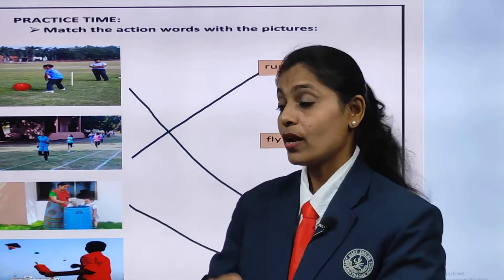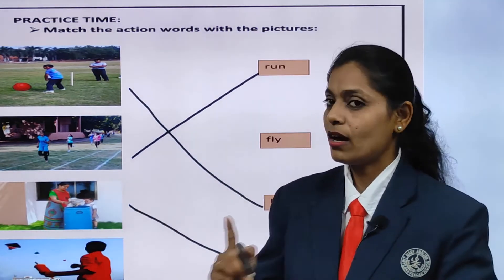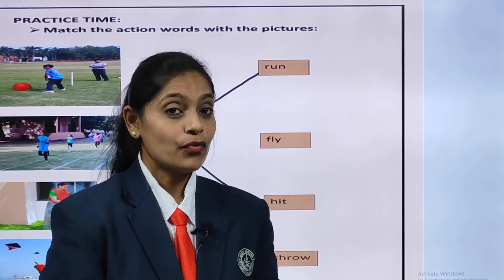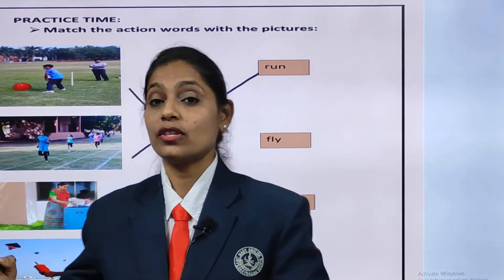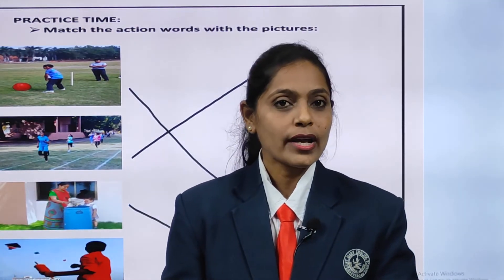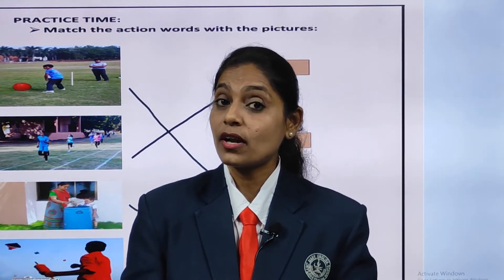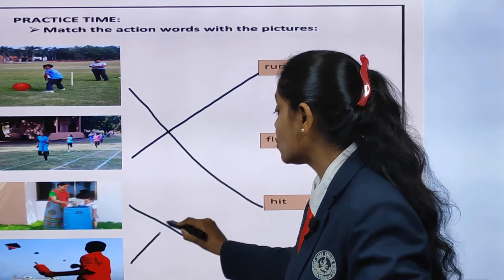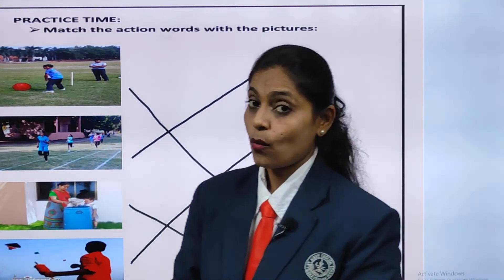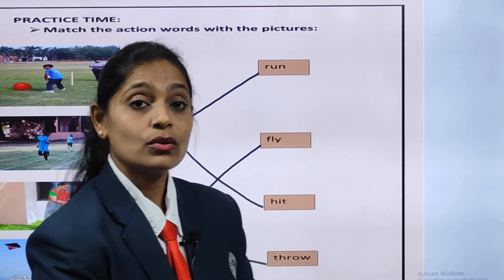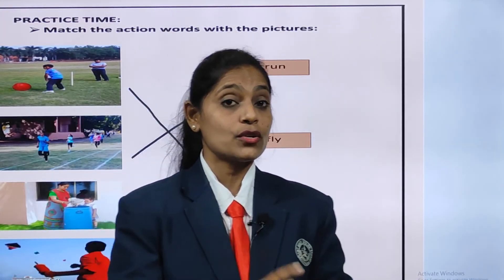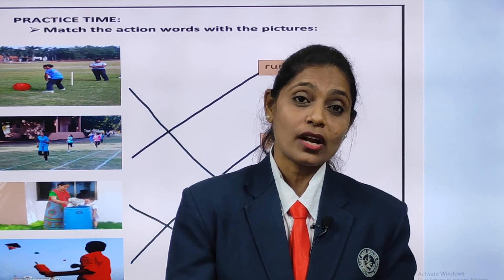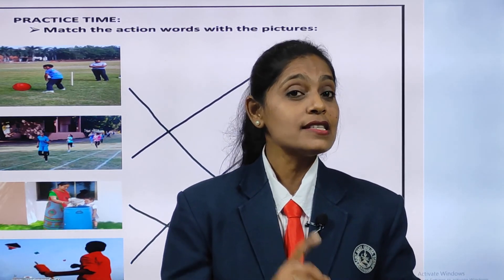Now the last one — what is the boy doing? He is flying a kite. All of you like to fly kites! So this boy is also flying the kite. What action is he doing? Fly! Even birds fly. So what are we going to do? We are going to join here. Now you are going to practice all these action words at home by doing the actions. Be good children, always obey your parents and study well. Bye!